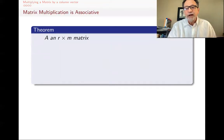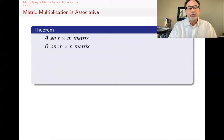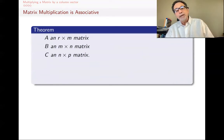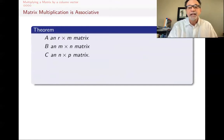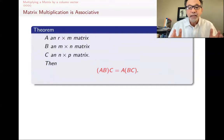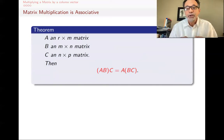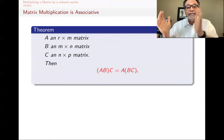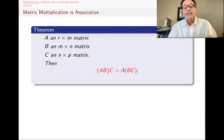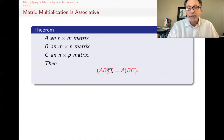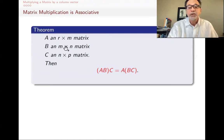As an application, we're going to prove that matrix multiplication is associative. If A is an R by M matrix, B is M by N, and C is N by P, then I can organize A·B·C in two ways: (AB)C or A(BC). Matrix multiplication is not commutative — AB is not the same as BA — but I can put parentheses in different places. (AB)·C equals A·(BC). It's important that the dimensions are compatible: the first matrix has the same number of columns as the number of rows of the second, and so on.